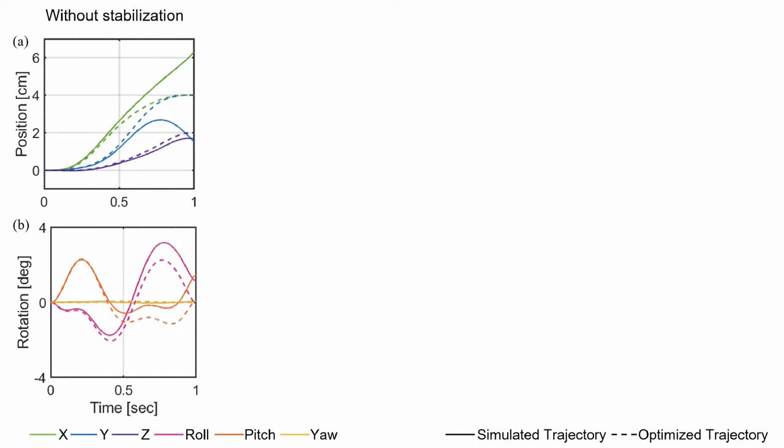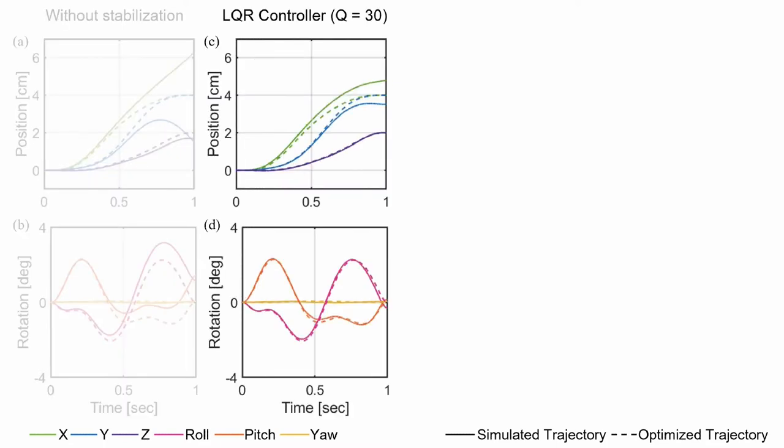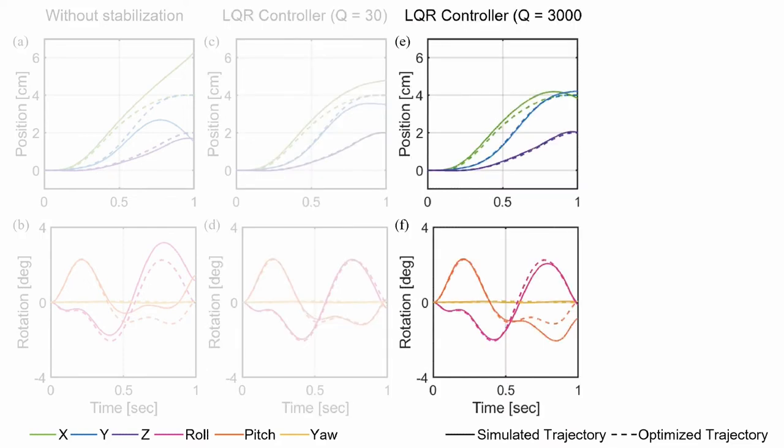If we look at some simulation results, we can see when there are disturbances and there is no feedback stabilization, both position on the top and orientation at the bottom diverge from the nominal trajectory. But when we have LQR controller, then the trajectory stays closer to the nominal one. When we even tune up the position gain of the LQR, then the position error is smaller compared to the previous one.